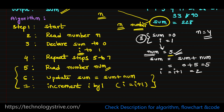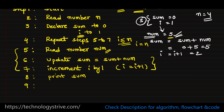Step 7: increment i by 1, meaning i equals i plus 1. These two steps can be combined. So steps 5 to 7 are going to be repeated n times. Repeat steps 5 to 7 until i is less than or equal to n — or until i equals n. Once all n numbers are processed, step 8 is to print the sum. Finally, step 9 is to stop the algorithm.